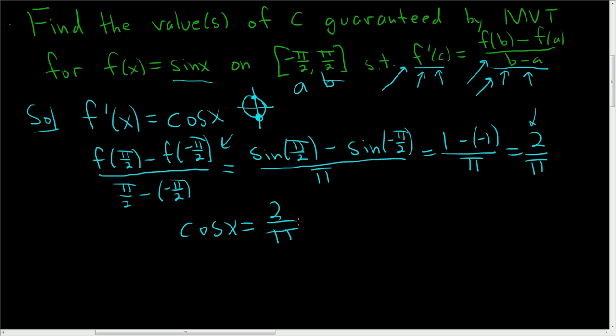At this point, you go to your calculator, right? 2 over pi is not something nice. So if you go to your calculator, you get that x is approximately equal to, well, it's equal to the inverse cosine of 2 over pi.